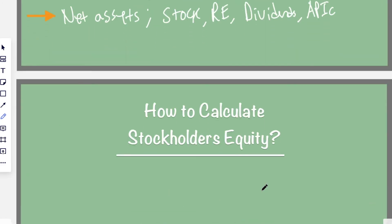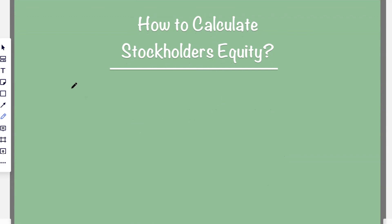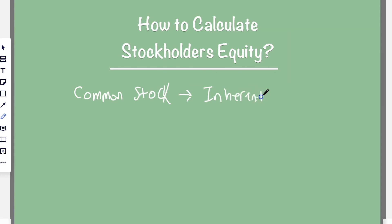So how do you calculate equity? You're going to have a lot of different items. You start with common stock, which is the most common form of stock, and it has an inherent value to it. For example, when you founded the company it might be valued at a dollar per share — that stated value stays the same — but you're also going to have a market value, which will fluctuate based on the market.